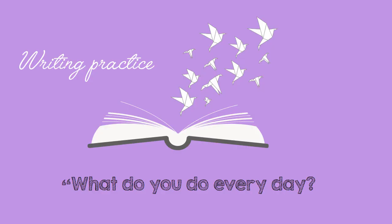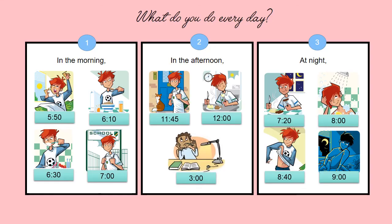Writing practice. What do you do every day? For this activity, you need to use your notebook. In your notebook, remember to write the date and the title: "What do you do every day?" Then you're going to write sentences for me. Look at the pictures — one, two, and three — and form sentences. Here we have in the morning, in the afternoon, and at night, with the activities and the time. For example: In the morning, I get up at 5:50. And then you continue.